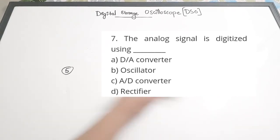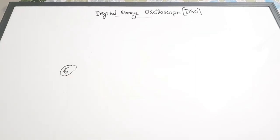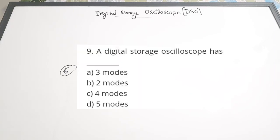Sixth question: A digital storage oscilloscope has - the question is regarding modes. A - 3 modes, B - 2 modes, C - 4 modes, D - 5 modes. Correct answer is A - it has three modes. We have also seen what the modes are: roll, store, and hold or save. Correct answer is A, three modes.